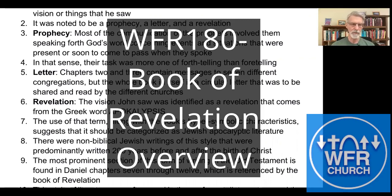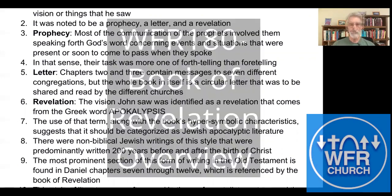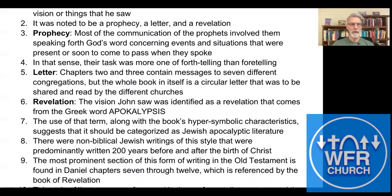The Book of Revelation is not only a prophecy, it's a letter. Chapters two and three contain messages to seven different congregations, but the whole book itself is a circular letter that was to be shared and read by the different churches. The letters to the different churches address different issues in each church, but the whole book is going to be circulated to all the churches.